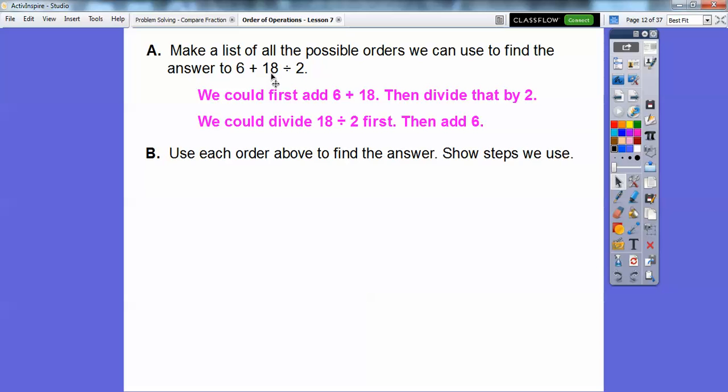Use each order above to find the answer and show the steps that we used. So we'll do this one first. Let's go ahead and add the 6 + 18. 6 + 18 is 24 and then take 24 ÷ 2. 24 ÷ 2 is 12. What if we did the 18 ÷ 2 first? 18 ÷ 2 is 9 and then add 6 after that. 9 + 6 is 15.